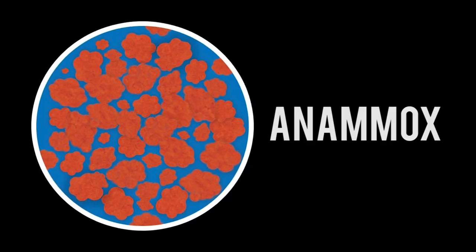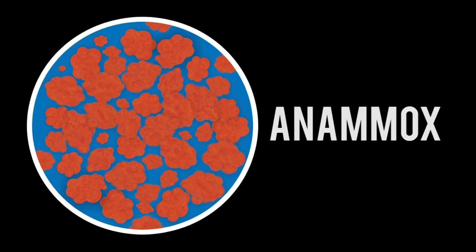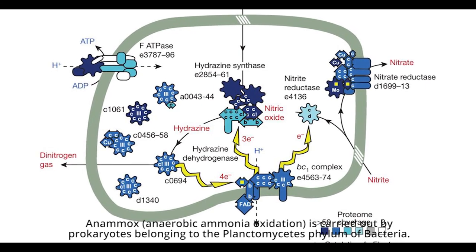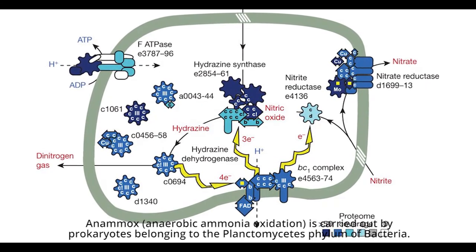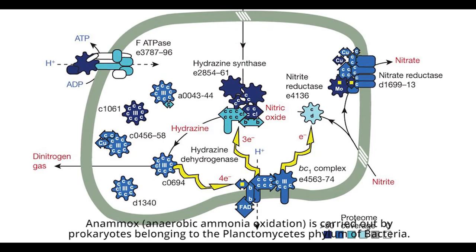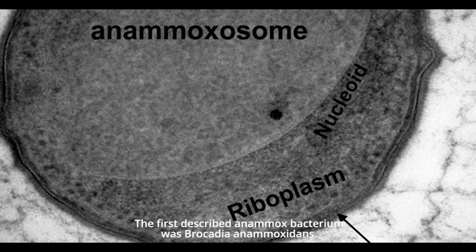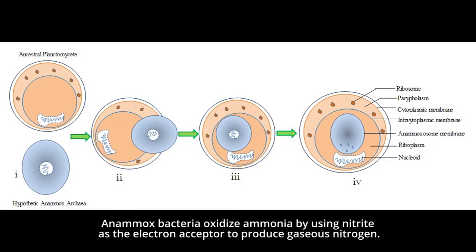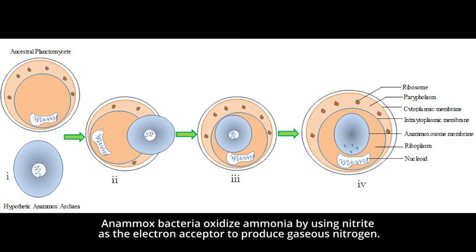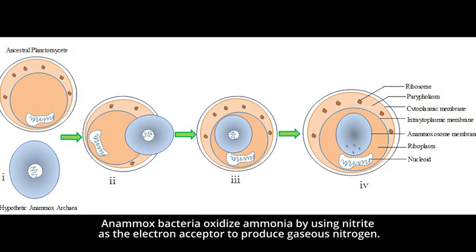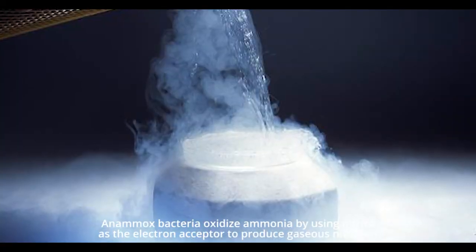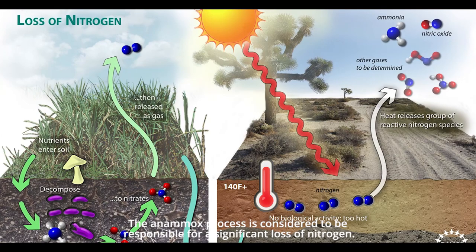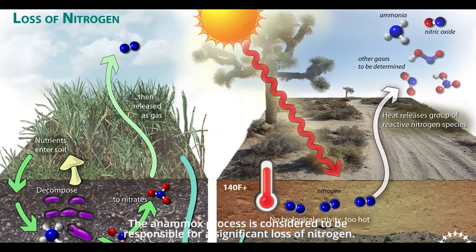The third process is anammox — anaerobic ammonia oxidation — carried out by prokaryotes belonging to the Planctomycetes phylum of bacteria. The first described anammox bacterium was Brocadia anammoxidans. Anammox bacteria oxidize ammonia by using nitrite as the electron acceptor to produce gaseous nitrogen. The anammox process is considered to be responsible for a significant loss of nitrogen.